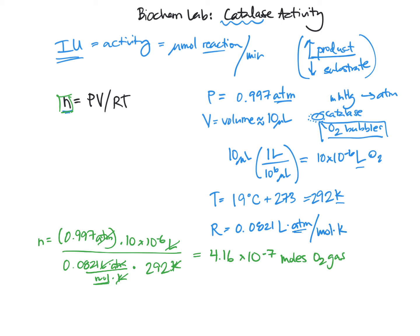All right, so we've got moles of gas, but if you look up in this definition of the activity in international units, it's in micromoles. So we need to convert now our moles to micromoles. Of course, that's easy to do up here. We can say 10 to the 6 micromole is the same as 1 mole, and that's going to give us a value of 0.416 micromoles of O2 gas.